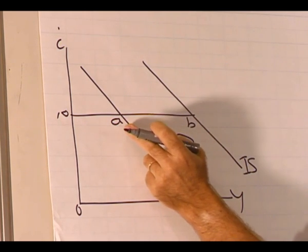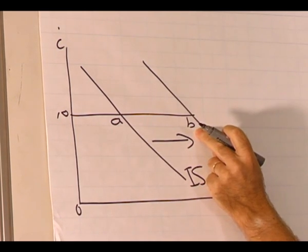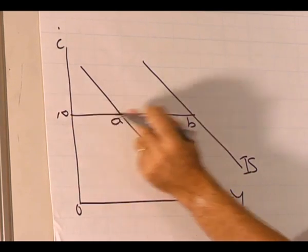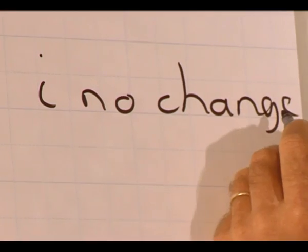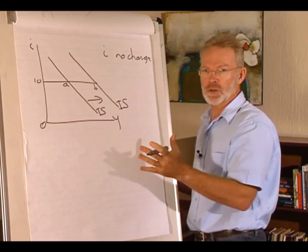But how does point A differ from point B? We know that the interest rate did not change so there is no change in the interest rate. But what about the other variables? What has happened to them?